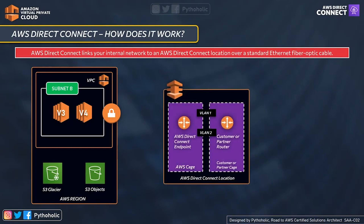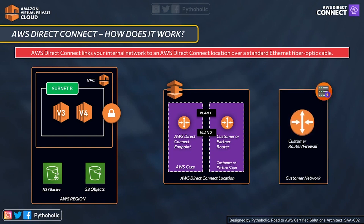This is how the Direct Connect setup looks. You have the Direct Connect endpoint in the AWS cage — a cage is like your rack or site — which is connected to the customer or partner router in the respective cage, which then creates a connection to the premises network or the customer network.